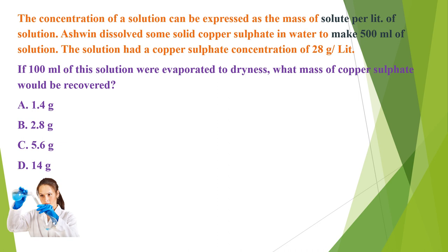First question: the concentration of solution can be expressed as the mass of solute per liter of solution. Someone dissolved some solid copper sulfate in water to make 500 ml of solution. This solution had a copper sulfate concentration of 28 grams per liter. If 100 ml of the solution were evaporated to dryness, what mass of copper sulfate would be recovered?